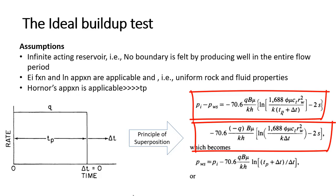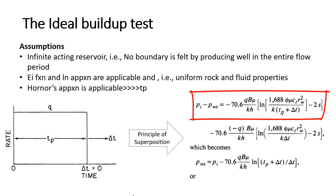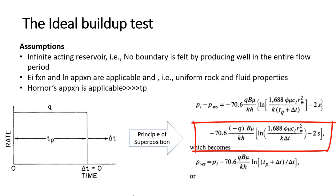There are two layers in this case. The first layer is from the beginning, that is tp plus delta t, and we include the skin because we are calculating the pressure at rw, and the skin effect is there, and we apply the ln approximation. For the second layer, q2 minus q1 — q2 is 0 — so that gives minus 70.6 × (0 − q)/kh multiplied by μB. The ln approximation is applied, and the second layer is written from delta t = 0, so only k × delta t is there, minus 2S because the skin effect is present.